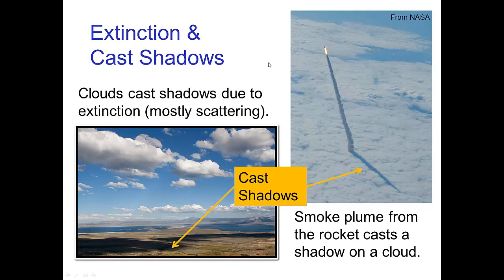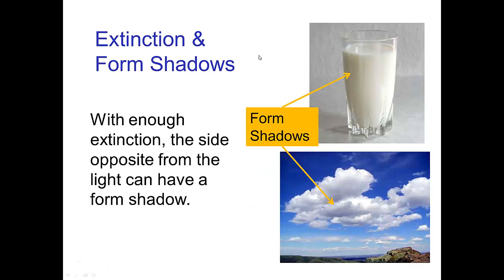Extinction, whether due to scattering or absorption, can result in cast shadows. We see the cast shadows of clouds on the ground. In another photo, smoke from a rocket seen from high up casts a shadow on top of clouds below it. We can also have form shadows due to extinction — the bottoms of clouds are often dark, and we can think of this as a form shadow due to scattering of light by the cloud above.